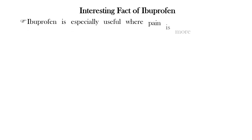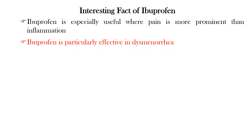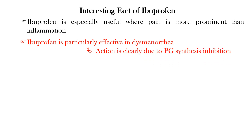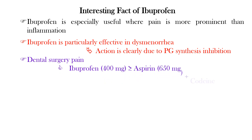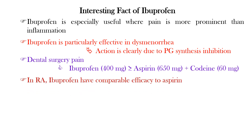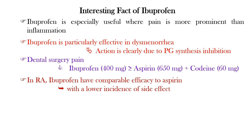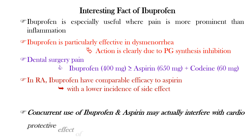Ibuprofen is especially useful where pain is more prominent than inflammation. Ibuprofen is particularly effective in dysmenorrhea, where the action is clearly due to the inhibition of prostaglandin synthesis. In dental pain surgery, the efficacy of Ibuprofen 400 mg is equal to or more than the combination dose of aspirin 650 mg and codeine 60 mg. In rheumatoid arthritis, Ibuprofen has comparable efficacy to aspirin with a lower incidence of side effects. However, the concurrent use of Ibuprofen and aspirin may actually interfere with the cardioprotective effect of aspirin.